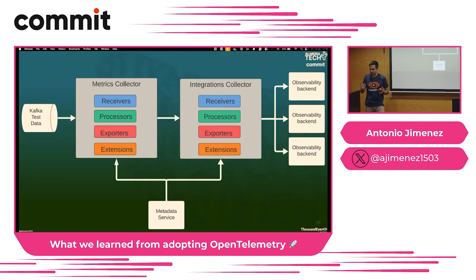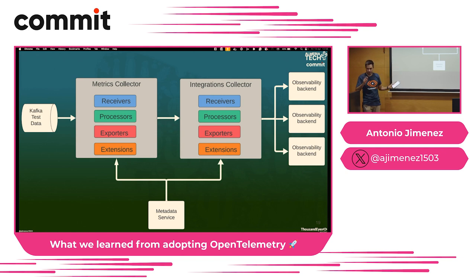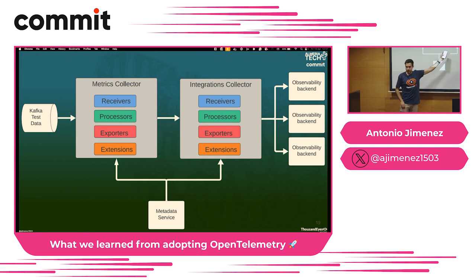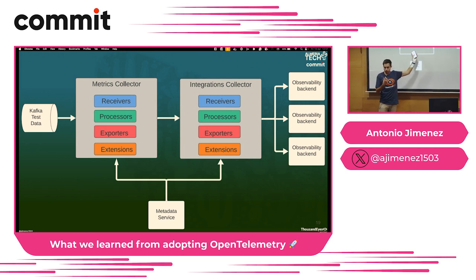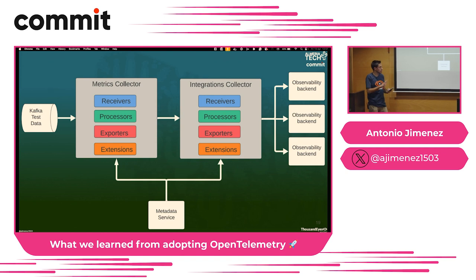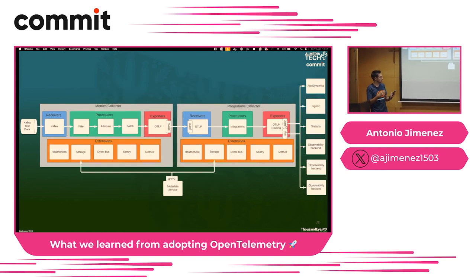Now let's jump into the architecture — the meat of this talk. We have agents around all the world running those tests. Those agents send telemetry data using Kafka. Then we have two OTel collectors: the first one receives data from Kafka, processes it, and exports to the next collector. The second collector receives that data, processes it, and exports to the observability backend configured by the customer. In order to have the association in real time, we query a metadata service to get the extra data we need.